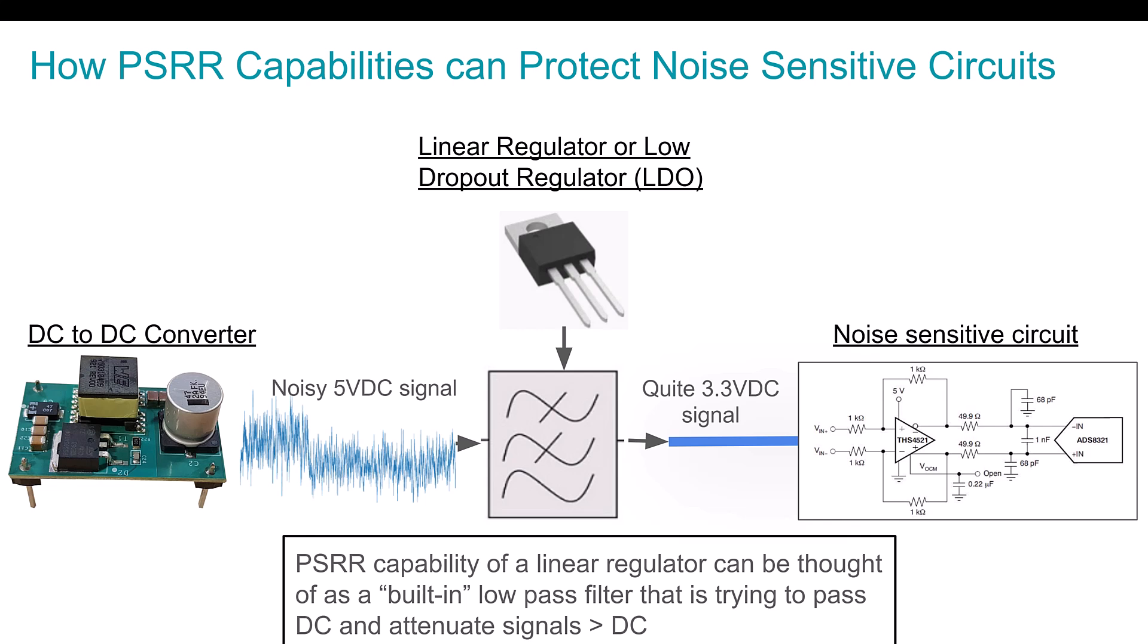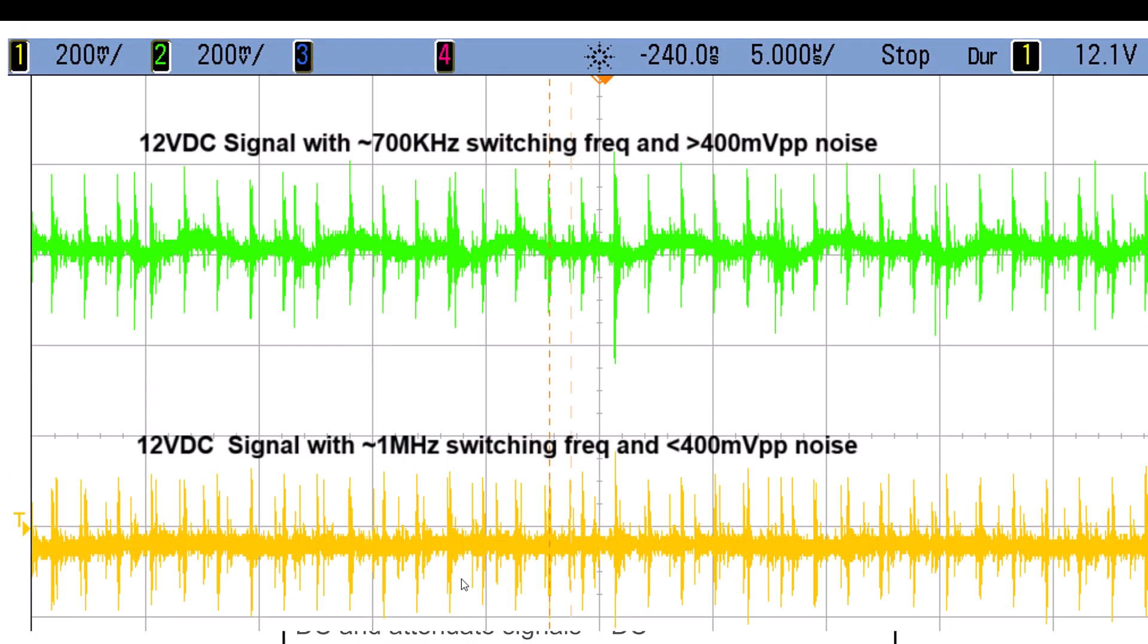And here's a diagram of sort of what I was talking about, where most designs will have some type of DC to DC converter or AC to DC power supply that creates that efficient power conversion, but it creates a noisy signal. And then a linear regulator, and you can see in this diagram, I have it represented as a low pass filter, can change that voltage, but also help attenuate some of that noise, right? So once again, I'm not saying that a linear regulator is a filter. It's a device that regulates a higher voltage to a lower voltage, but the PSRR spec can be a secondary benefit when you're working with noise sensitive signals.